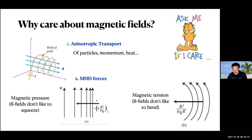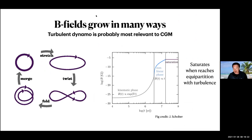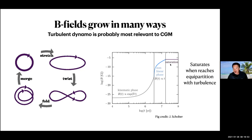Magnetic fields also create MHD forces: magnetic pressure, where field lines resist being squeezed together, and magnetic tension, where field lines resist bending. In terms of how magnetic fields grow, turbulence can grow magnetic fields through something called the turbulent dynamo. A simple rule of thumb is that the field grows exponentially when weak, then linearly, and saturates very roughly when kinetic energy density is of order the magnetic energy density — equipartition — because magnetic tension then prevents easy bending of field lines.